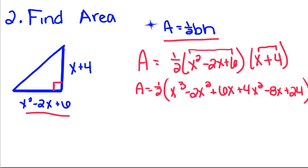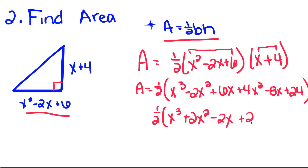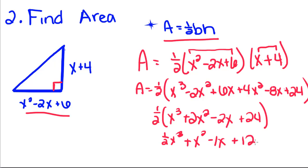It's easier to combine like terms first, then distribute the one-half. We have one x³, -2x² + 4x² gives positive 2x², 6x + (-8x) gives -2x, and positive 24. Now distributing the one-half: one-half x³, one-half of 2 is 1 so x², one-half of -2x is -x, and one-half of 24 is 12. So the area is ½x³ + x² - x + 12.